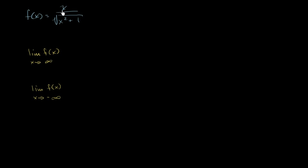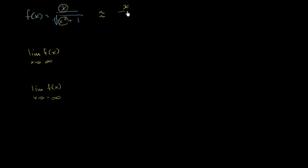In the numerator, we only have one term — this x term. But in the denominator, we have two terms under the radical. As x gets larger and larger, either in the positive or negative direction, this x squared term is going to really dominate the 1. When x is a million, you have a million squared plus 1 — the denominator is dictated by the x squared term. So this is approximately equal to x over the square root of x squared.